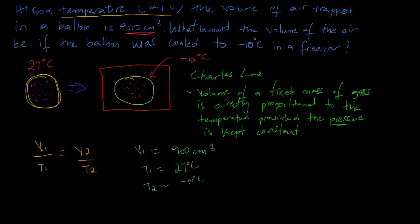To convert from 900 centimeters cubed to meters cubed, we simply divide this value by one thousand cubed. So we have 900 centimeters cubed divided by 1000 cubed, and that works out to be 9 times 10 to the minus 7 meters cubed.